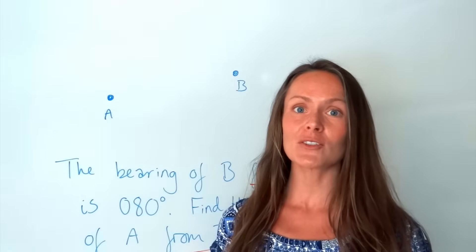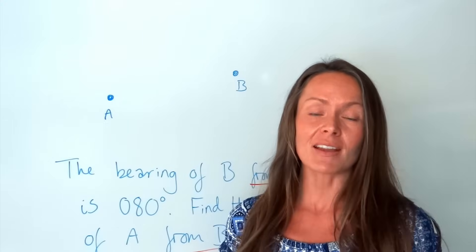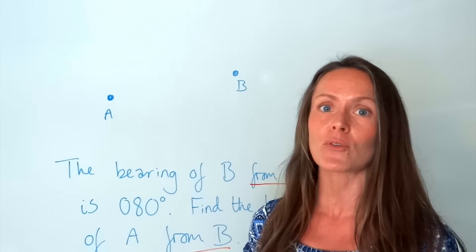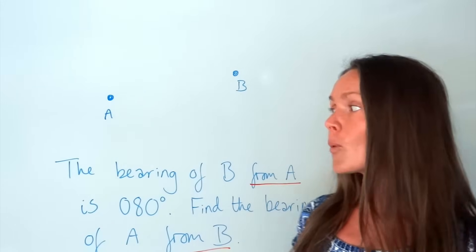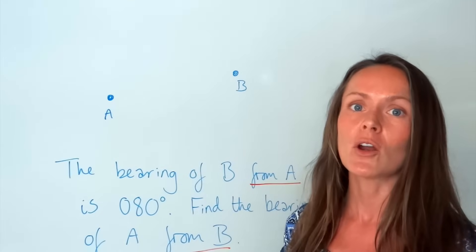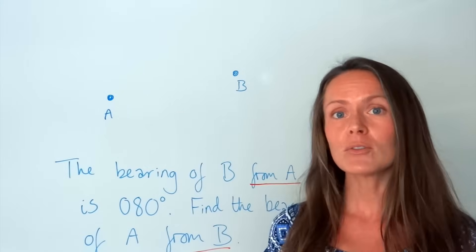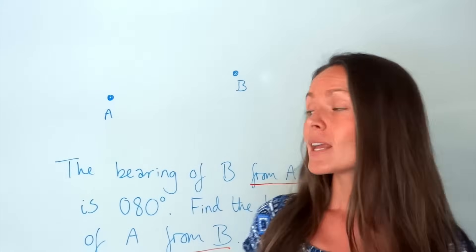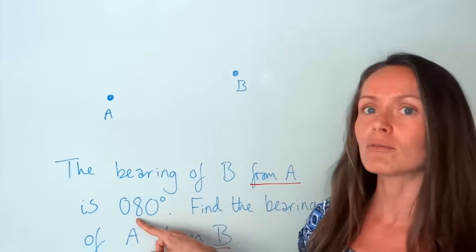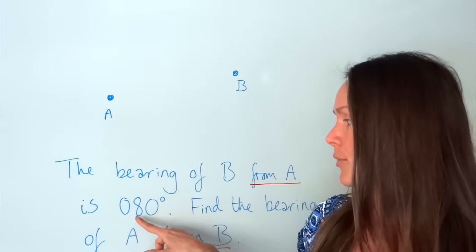In this video I'm going to talk you through some questions on bearings. Bearings are just angles, but they're special angles because we always measure them from the north arrow. When we measure these angles, we also measure them clockwise. They also need to be three figures, so if you measure an angle that's 80 degrees, we put a zero at the front so that there are three figures.